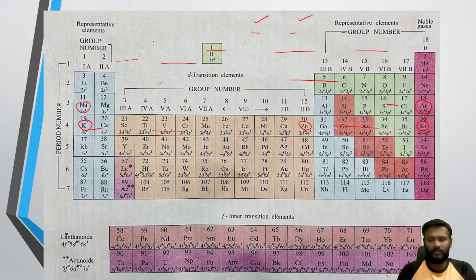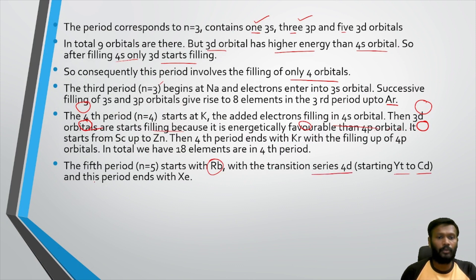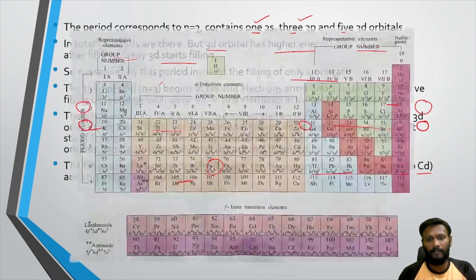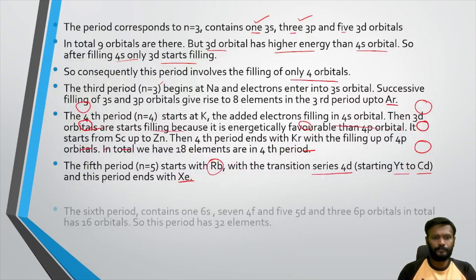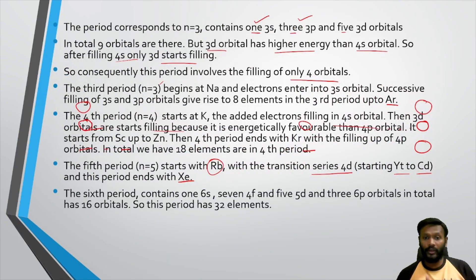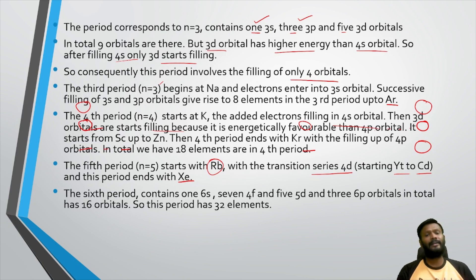The 5th period similarly has 18 elements, ending with xenon. The 6th period involves the 6s, 4f, 5d, and 6p orbitals — a total of 16 orbitals. Since each orbital holds 2 electrons, 32 electrons can be filled, meaning 32 elements are present in the 6th period.